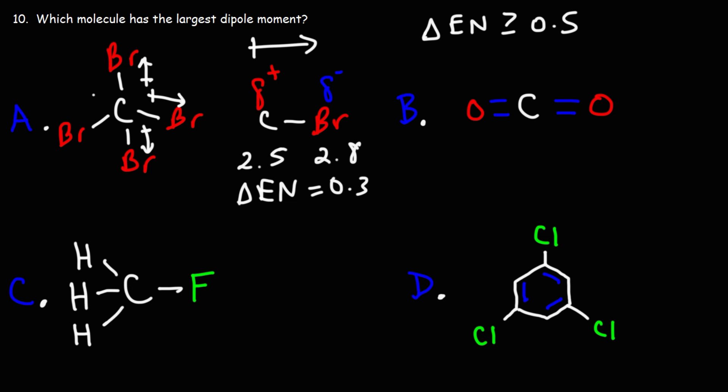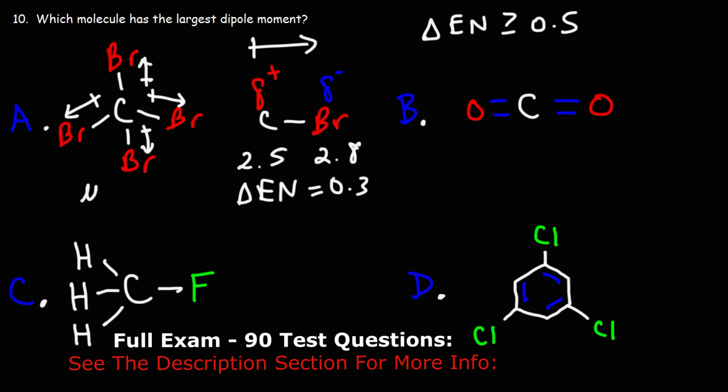These arrows will be small because the electronegativity difference is relatively small. But notice that all four outer atoms of this molecule are the same, and for this tetrahedral shape all of the dipole moments will cancel because the arrows are all pointing in opposite directions. So the dipole moment for carbon tetrabromide is zero — it is completely nonpolar.